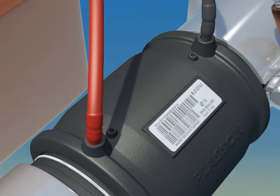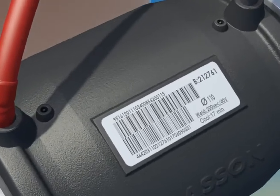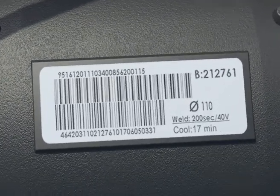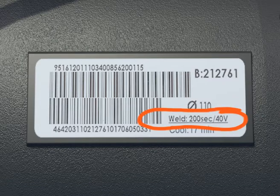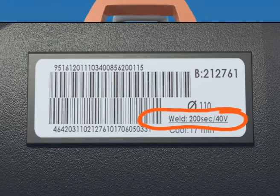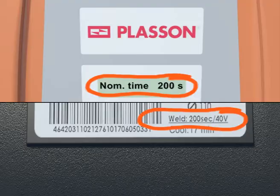The fusion time may be set automatically by a self-recognition resistor. Other options include a barcode reader and manual input. The correct fusion time is shown on the barcode label on each fitting. Be sure to check that the fusion time on the controller screen is identical to the fusion time on the barcode label.